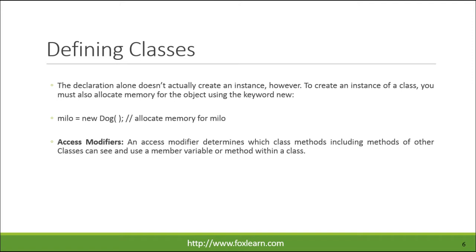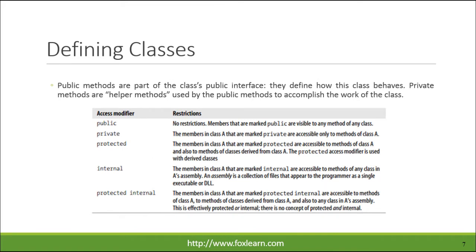Access modifiers: an access modifier determines which class methods, including methods of other classes, can see and use a member variable or method within a class. Public methods are part of the class's public interface — they define how this class behaves. Private methods are helper methods used by the public methods to accomplish the work of the class.